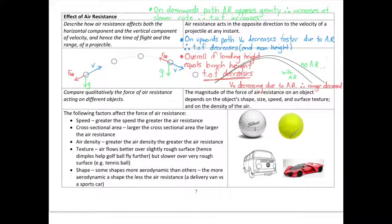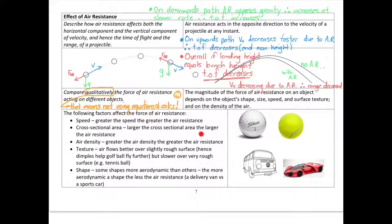The second thing to know about air resistance is comparing qualitatively the forces acting on different objects. First, speed: the greater the speed, the greater the air resistance — like holding your hand out a car window, the faster you go, the greater the force. Second, cross-sectional area: the larger the cross-sectional area, the larger the air resistance. For example, a basketball has a greater cross-sectional area than a golf ball and would experience much more air resistance.